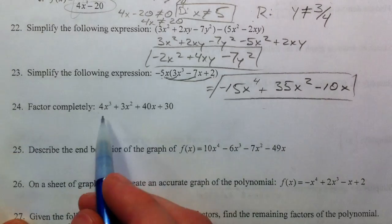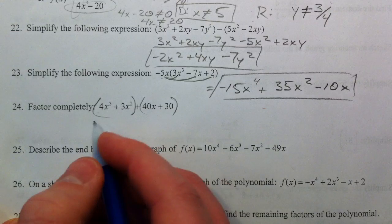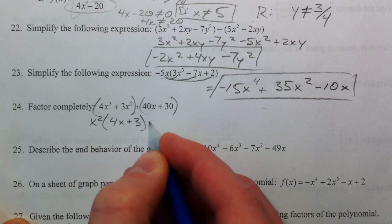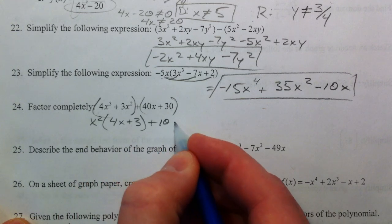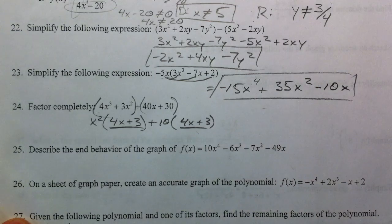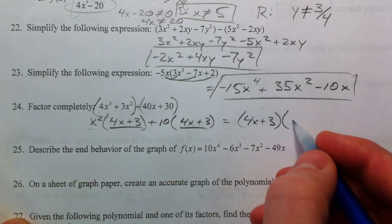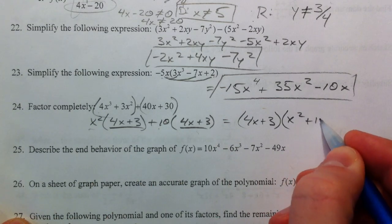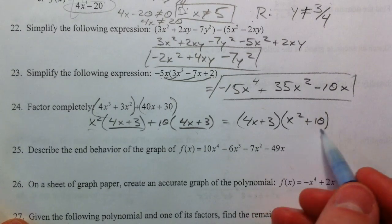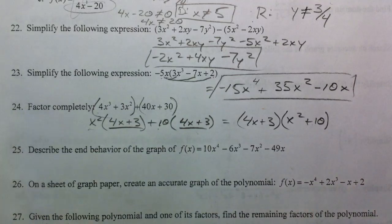Factor completely. Anytime you have 4 terms, you want to look at factoring by grouping. I can take out an x squared out of the first group, leaving a 4x plus 3, and I can factor out a 10 out of the second group, leaving a 4x plus 3. They have the 4x plus 3 in common, and so 4x plus 3 comes out in front, leaving x squared plus 10. We can't factor this anymore. Had this turned up as a x squared minus 16, we could have factored that some more, but because it's just x squared plus 10, not possible.